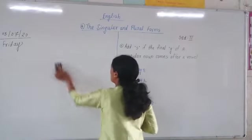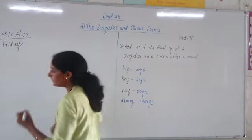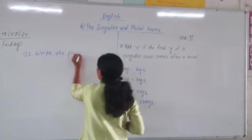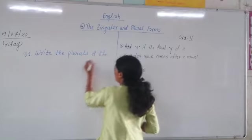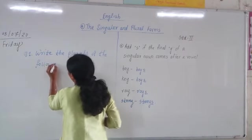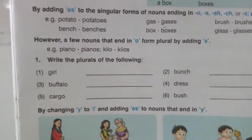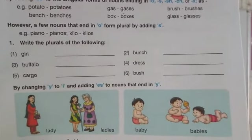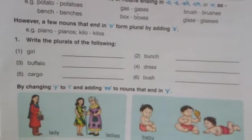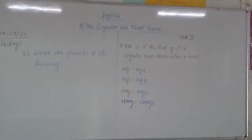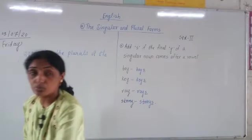Question number 1: Write the plurals of the following. The words are: girl — G-I-R-L, bunch — B-U-N-C-H, buffalo — B-U-F-F-A-L-O, dress, cargo, and bush. We are going to change each singular noun to the plural noun.